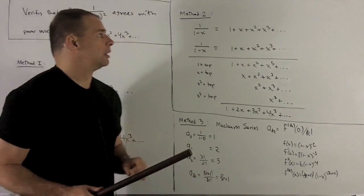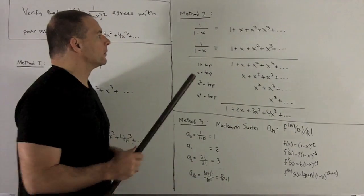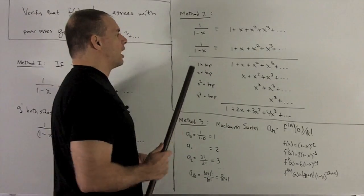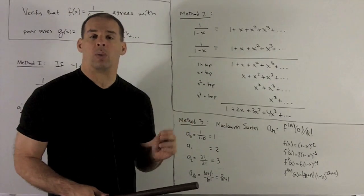Method 2, a little bit more fast and loose, but it's sensible. I'm going to take our geometric power series and just multiply it by itself. So that'll give me my 1/(1-x)².